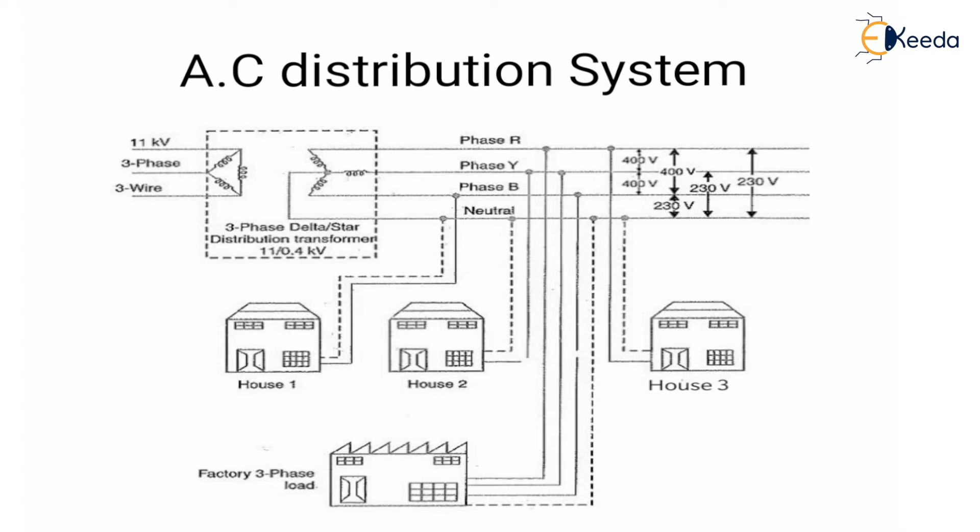Next is the DC distribution system. For certain appliances, DC supply is necessary — it is required for DC motors. DC supply is obtained in two forms: a two-wire system or a three-wire system. The two-wire system consists of two wires — a positive wire and a negative wire — and loads such as motors or lamps are connected in parallel between the two wires.